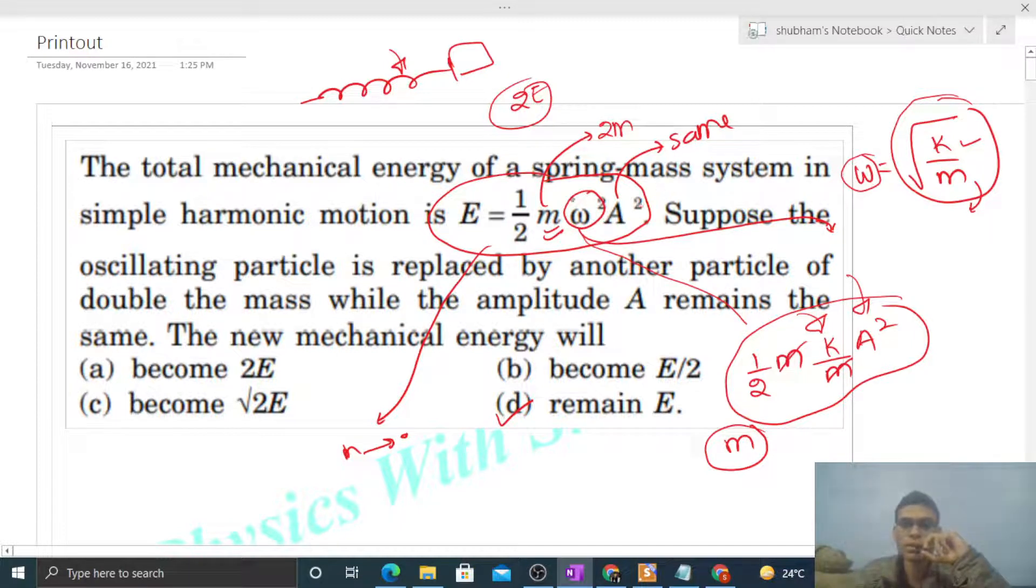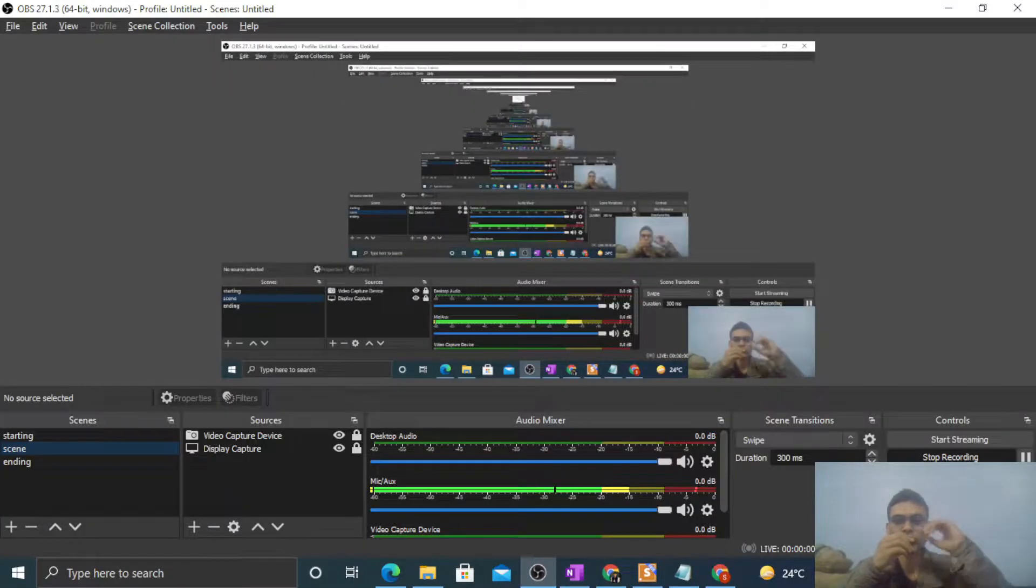Omega decreases because mass increases, and omega is inversely proportional to √m. I think you have understood. Let me know if you still have any confusion. Let's keep working hard, best of luck!